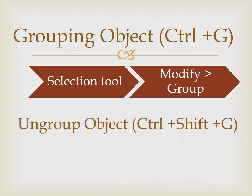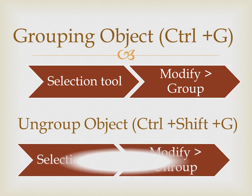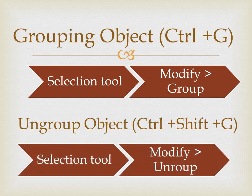Now for ungrouping: select an object that is grouped together, click the Modify menu, and then click on the Ungroup option. We can use the shortcut key Ctrl+Shift+G to ungroup. So for grouping we use Ctrl+G and for ungrouping we use Ctrl+Shift+G.